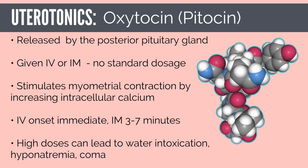Oxytocin works by stimulating myometrial contractility through an increase in intracellular calcium. The rate-limiting step is the number of oxytocin receptors on the myometrium — the highest concentration is at the fundus, and receptor concentration decreases toward the lower uterine segment and cervix. IV onset is almost immediate while IM is about 3 to 7 minutes. The half-life is 10 to 12 minutes, with no difference in efficacy between IV and IM. Exceedingly high doses, due to structural similarity to vasopressin, could lead to water intoxication, hyponatremia, and coma.